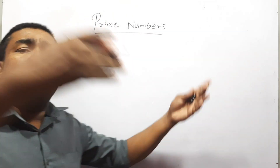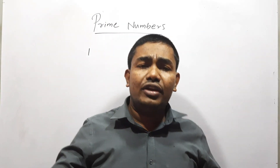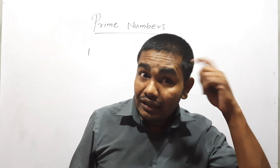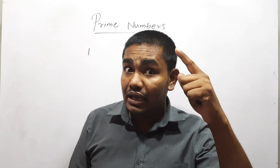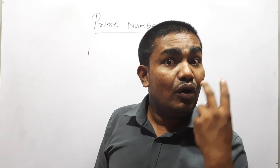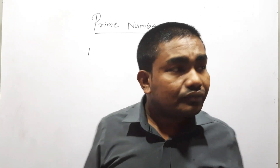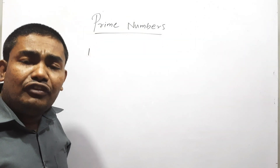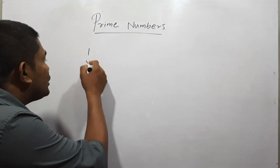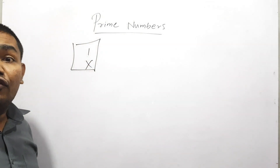Now, is one a prime number? A lot of students say one is a prime number, but why is one not a prime number? One is a whole number, but one is not a prime number. Why? Think about the theorem — there should be only two factors. The word 'only two' is very important. For one, we can divide by one only; there is no any other factor. Therefore one is not a prime number. This is very very important, don't forget this.